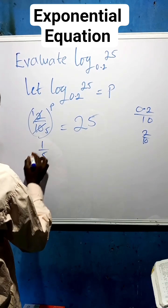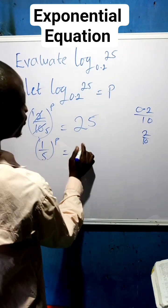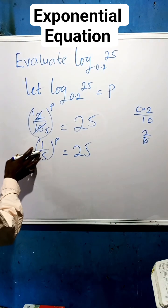I have left with 1 over 5 to the power of P equals to 25. So let us make use of the law of indices.